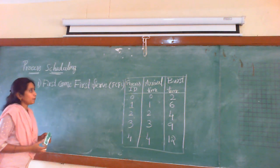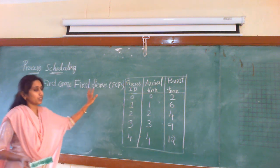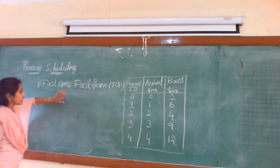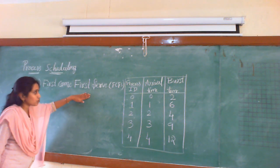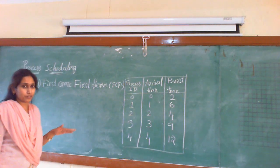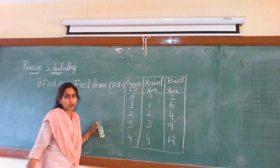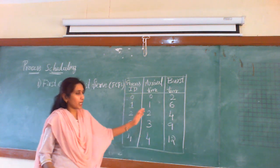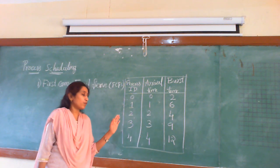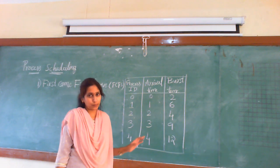Now coming to the first scheduling algorithm: First Come First Serve, or FCFS. The name itself says whichever process comes first is served first. Here is a chart showing the processes, their values, and arrival times. Based on this, we will draw a Gantt chart and determine the process execution order.